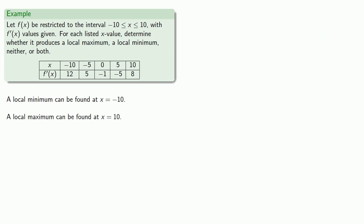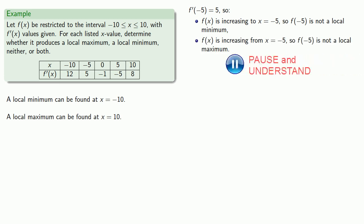How about at negative 5? Our derivative at negative 5 is 5, and so we know f(x) is increasing until we hit negative 5, which means that f(negative 5) can't be a local minimum. We also know f(x) is increasing from x equals negative 5, so that means f(minus 5) is not a local maximum.